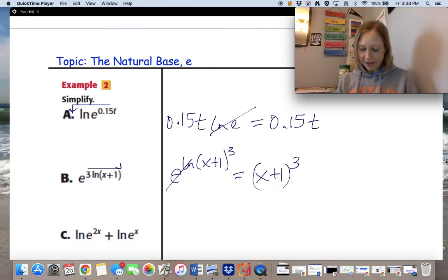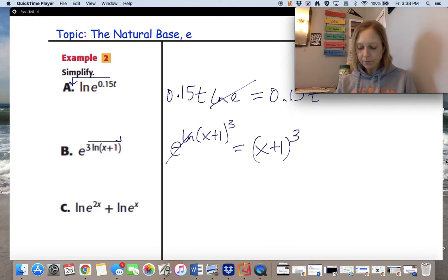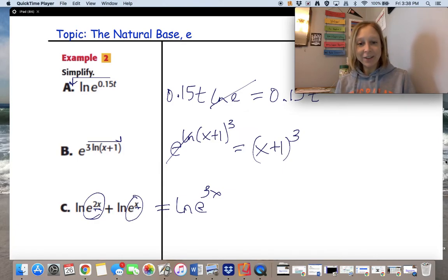Again, all of the same properties apply. We were using the product property just now, as well as inverse properties. What I noticed in this last example is I noticed that we have our product property. Remember we learned that if we see two logarithms with the same base being added together, we can multiply these two things and write a single logarithm. So the natural log, and remember when the bases are the same, we can add the exponents. 2x plus another x is 3x. So e to the 3x. And now I see the natural log and e next to each other. Remember that 3x can drop down in front. So 3x times the natural log of e. That's 1. So this is just 3x. All the same properties apply.